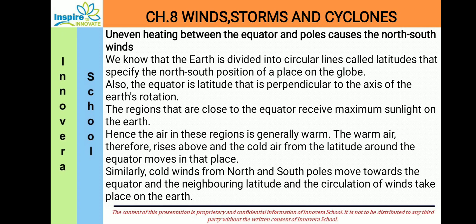Let us see a little about uneven heating between the equator and poles causing north-south winds. We know that the earth is divided into circular lines called latitudes that specify the north-south position of a place on the globe. The equator is the latitude that is perpendicular to the axis of the earth's rotation. The regions close to the equator receive maximum sunlight, so the air in these regions is generally warm.